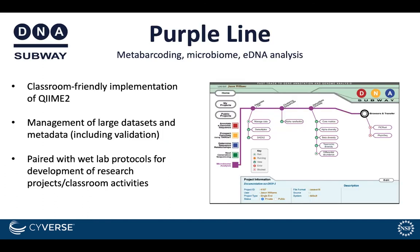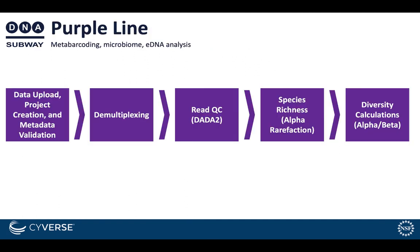Purpleline provides a workflow for metabarcoding, microbiome, and eDNA analysis, and is a classroom-friendly implementation of the QIIME2 workflow. You can work with large datasets, and it's paired with wet lab protocols for development of research projects and classroom activities. You can upload your data and validate metadata, demultiplex sequences, perform read QC, and then get determinations of species richness and other diversity calculations.